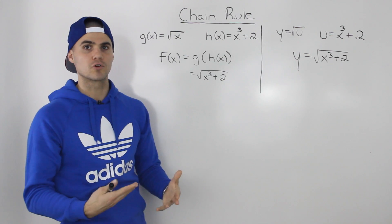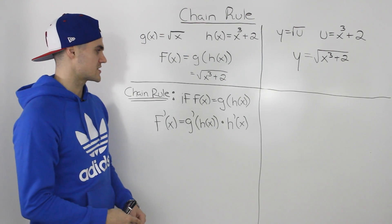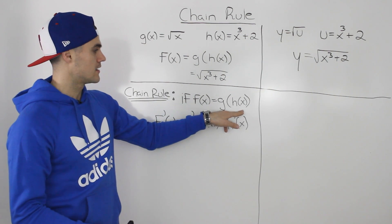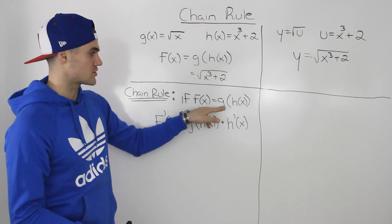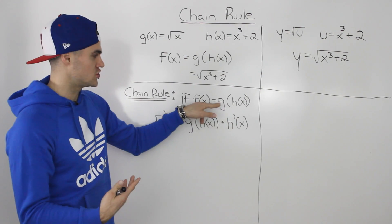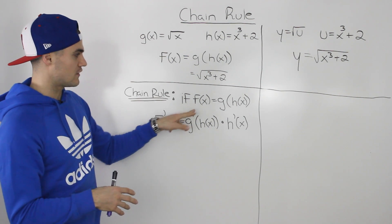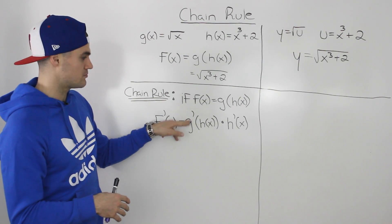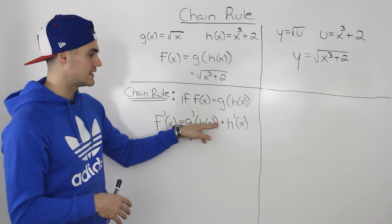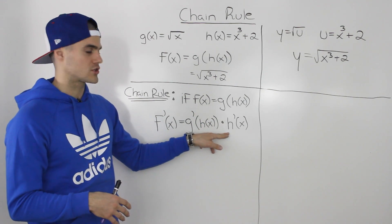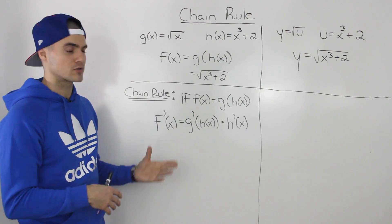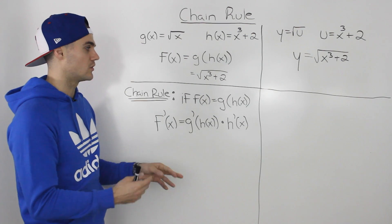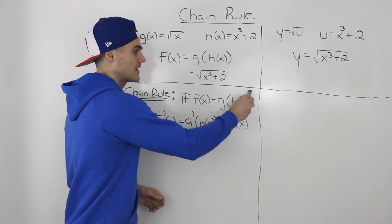One way the chain rule is presented: if f of x equals g of h of x — a function within another function — where h of x is the inner function and g is the outer function, then the derivative of that composite function is the derivative of the outer function g, evaluated at h of x, times the derivative of the inner function. This is very similar to the power of a function rule, but now we're representing the composite function as a general case — the outer function g can be anything, not just raised to the power of n.